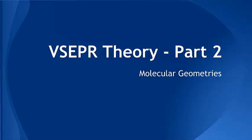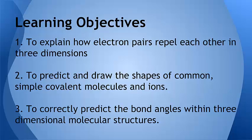This video is part two of a two-video series on valence shell electron pair repulsion theory. If you haven't watched the first video, I suggest you do that before you watch this one. The learning objectives for this video are the same as the last one. We're trying to figure out how to predict the shapes of molecules, and the key to doing that is by looking at the central atom and figuring out how many domains you have.